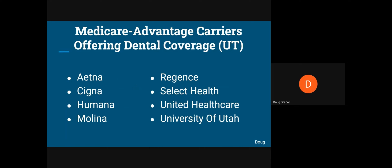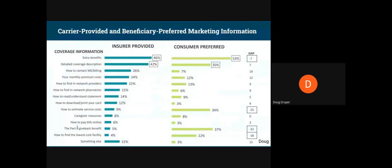This is not a promotion, but Medicare Advantage carriers offering dental coverage in Utah include Aetna, Cigna, Humana, Molina, Regence, Select Health, United Healthcare, and University of Utah. Cigna really brought dental into the Utah market and took significant market share its first two years, forcing all other carriers to respond. Now it's a fairly level playing field.